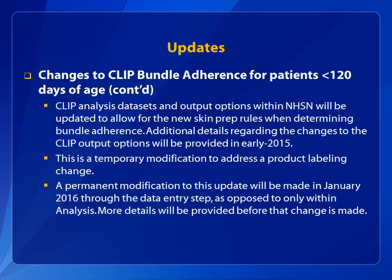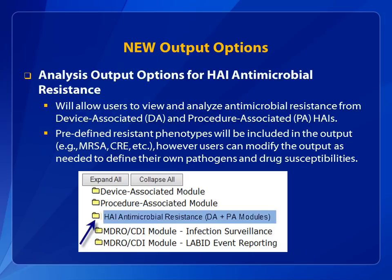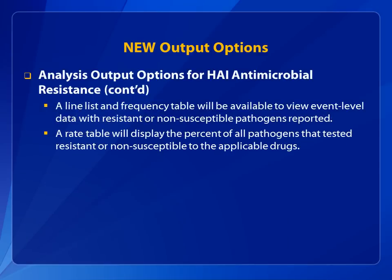Additional details regarding the changes to the CLIP output options will be provided in early 2015. New analysis output options are available that are specific to antimicrobial resistance data. These reports allow users to view and analyze antimicrobial resistance from device-associated and procedure-associated HAIs. Pre-defined phenotypes are included in the output, for example MRSA and CRE. However, users can modify the output as needed to define pathogens and drug susceptibilities that are of interest to them. Other new output options include a line list and frequency table available to analyze event-level data with resistant or non-susceptible pathogens reported for these select HAIs.